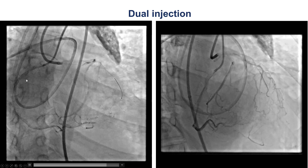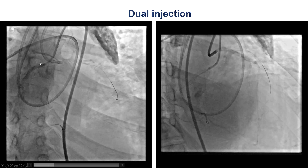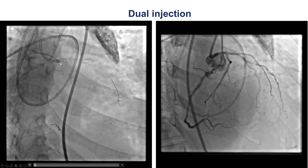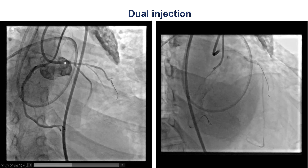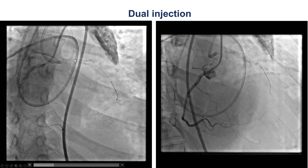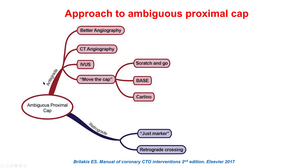We then moved our efforts to recanalizing the LAD CTO. On dual injection — injecting first from the right coronary artery and then from the left main — in caudal views we can see what may be an entry point into the CTO, with heavy calcification along the course of the vessel. Previously we often used a primary retrograde approach for proximal cap ambiguity, but the retrograde approach carries increased risk compared with antegrade crossing. Therefore, if antegrade techniques can be used, that is advantageous. Multiple projections suggested a likely entry into the CTO.